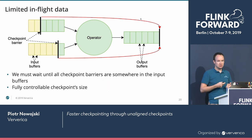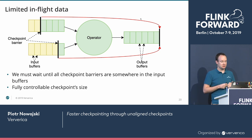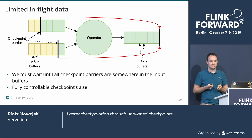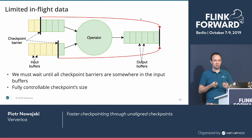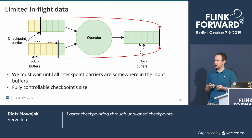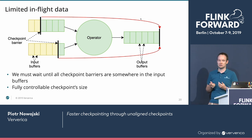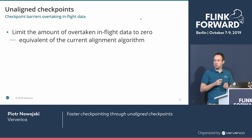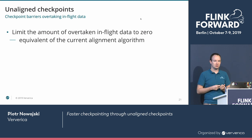Another option is to limit the in-flight data to, for example, 100 megabytes. The downside is that we must wait for checkpoint barriers to arrive somewhere in the input buffers, which makes it somewhat slower than the first option. However, the upside is fully controllable checkpoint size. It will still be faster than a fully aligned checkpoint because we can still overtake some or most of the data. Notably, if we limit the in-flight data to zero, that is equivalent to the current alignment algorithm.